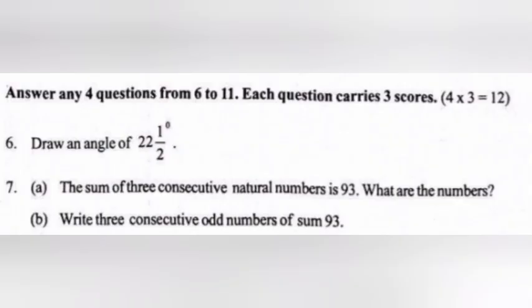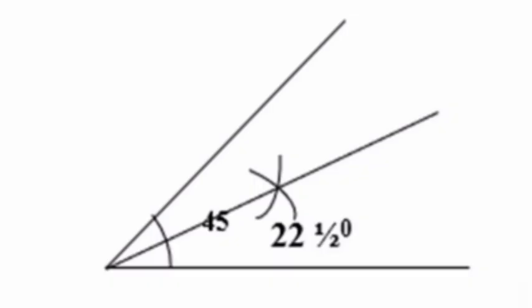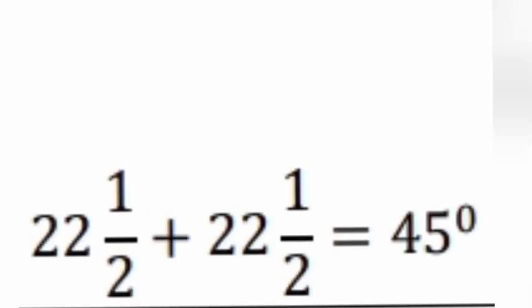6. Draw an angle of 22.5 degrees. Answer: 22.5 plus 22.5 equals 45 degrees.